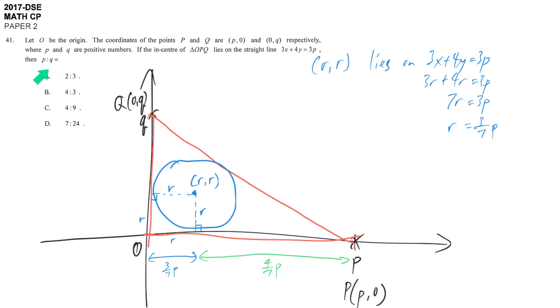Our target is to find the ratio P:Q. We're not finding P or Q individually, but their ratio. Our first mission is to connect P and Q in one equation using the property of tangent from an exterior point.